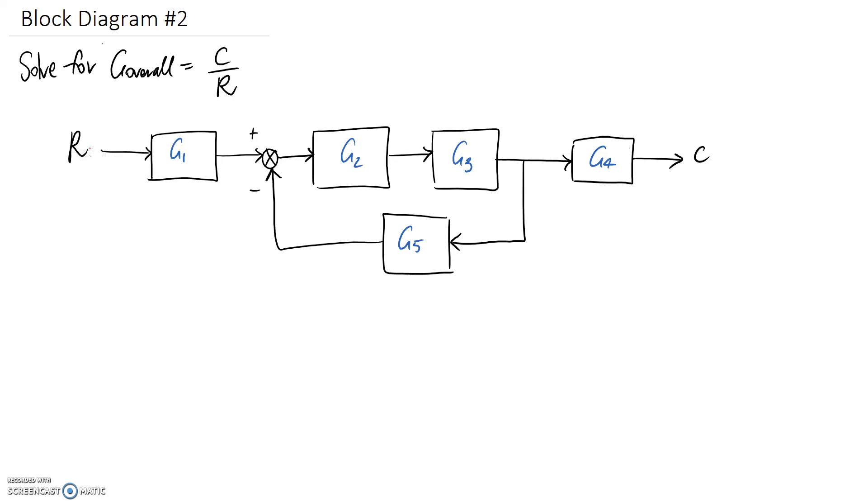Starting at the left hand side here we've got r and if we want to jump over this summing junction and work out the signal at this point we need to multiply the signal by the block. So the signal at this point is just going to be r times g1. At this point it now goes into a summing junction and we can see that we need to take the positive of that signal.